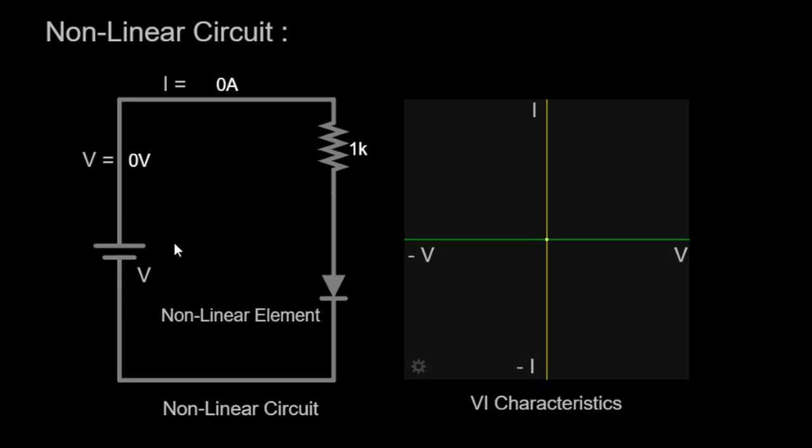Explanation of Non-Linear Circuits. Before we dive into the specifics, let's take a moment to understand what a non-linear circuit is. In a linear circuit, the relationship between voltage and current remains constant, following Ohm's law. However, in a non-linear circuit, the relationship between voltage and current is not proportional and can vary depending on the components employed. This introduces intriguing behaviors and characteristics that we'll explore further in this video.